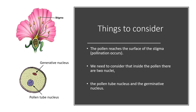There are things to consider before we answer the question. The pollen reaches the surface of the stigma — as we learned in the last video, that is called pollination. We also need to consider that inside the pollen there are two nuclei: the pollen tube nucleus and the generative nucleus. We will learn on the next slide what they will do and what will happen to these nuclei as the pollen tube grows.